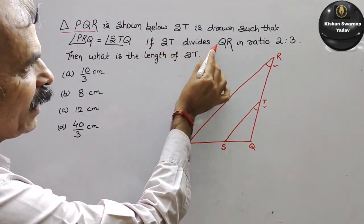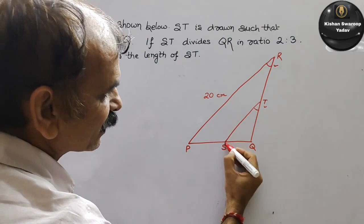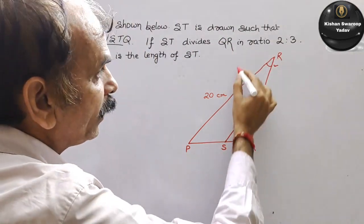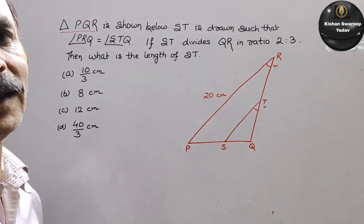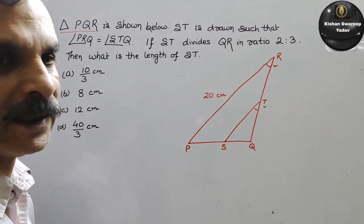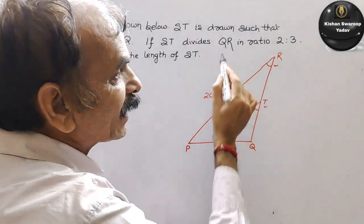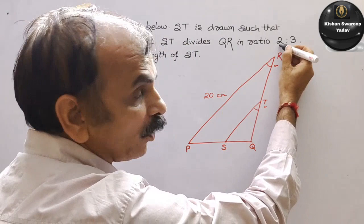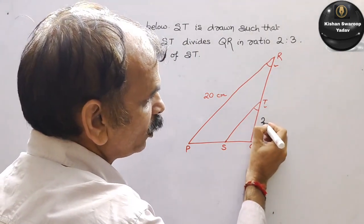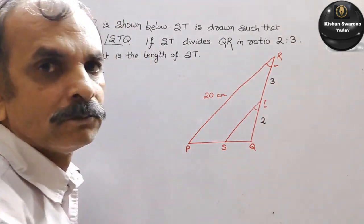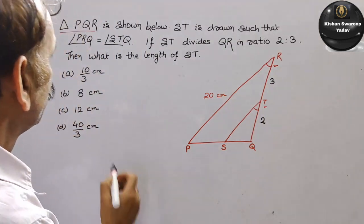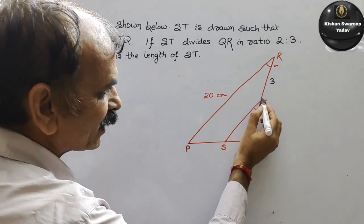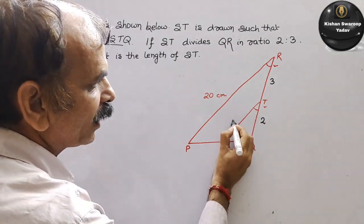If ST divides QR — ST divide kar raha hai QR ko — in ratio 2:3. Toh aapko kaise karna hai? Q se R ki taraf ja rahe hain hum log, toh Q se R ki taraf jaana hai, aur 2 comes first, toh yeh ho gaya 2, yeh ho gaya 3. Then what is the length of ST — toh ST ka length aapko nikalna hai.